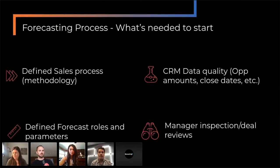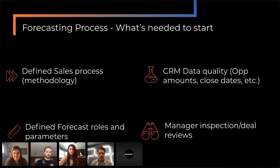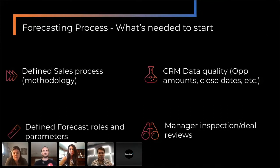I wanted to ground people in what I see as critical — you can't even build a forecast process unless you have this stuff. You can have a beautiful process, but if you don't have clean data, it doesn't matter what process you run that dirty data through. You're not going to get an accurate forecast. So to me, number one is define sales process. If you're in stage one or stage five, what does that mean? What are the entry and exit criteria for each of the stages? Is there consistency within your sales organization around having deals at specific sales stages?